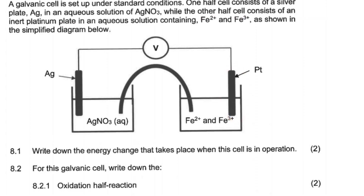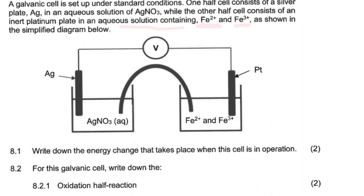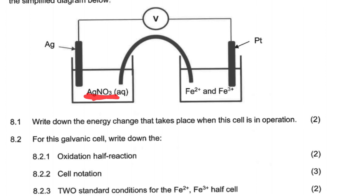The other half-cell consists of an inert platinum electrode. The platinum serves as an electrode and conducts electricity. It's inert, meaning it does not react with anything. There's an aqueous solution containing Fe²⁺ and Fe³⁺ ions, as shown in the simplified diagram below. We also have a voltmeter and a salt bridge.